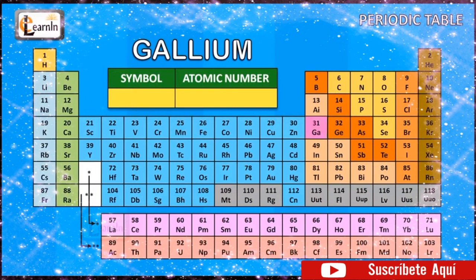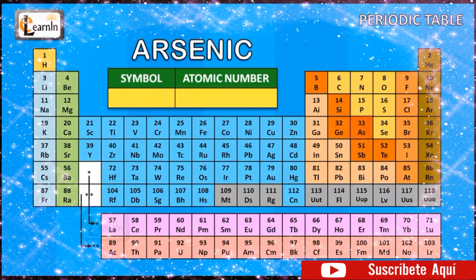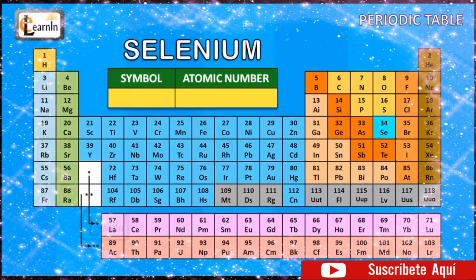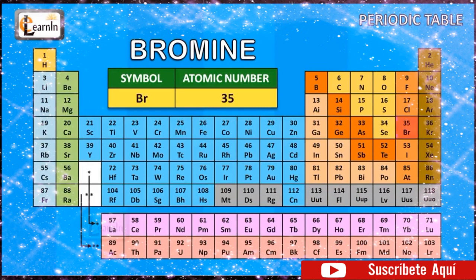The element gallium is represented as Ga and has an atomic number of 31. The element germanium is represented as Ge and has an atomic number of 32. The element arsenic is represented as As and has an atomic number of 33. The element selenium is represented as Se and has an atomic number of 34. The element bromine is represented as Br and has an atomic number of 35.